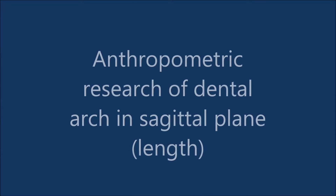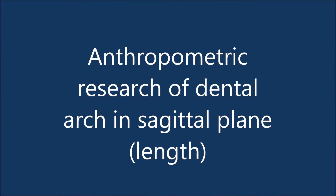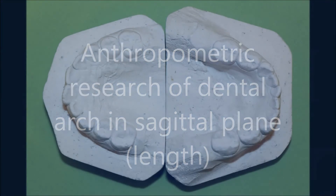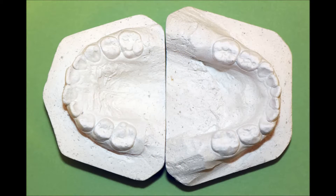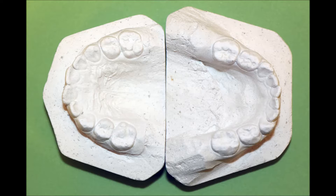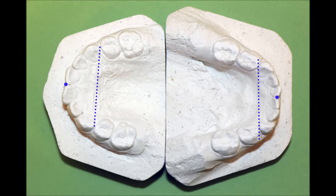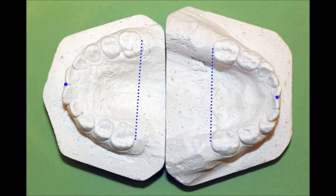Anthropometric research of dental arch in the sagittal plane — length. In primary dentition, Dolga Polova proposed to determine the frontal length of the dental arch and the general length of the dental arch. Frontal length is measured from a point between the central incisors to the midpoint of the intercanine line. General length of the dental arch is measured from a point between the central incisors to the midpoint of the intersecond molar line.